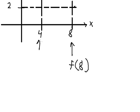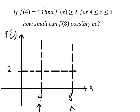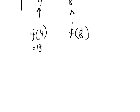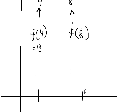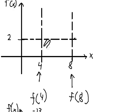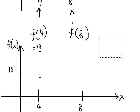We know f of number four. f of number four equals 13, so we need to graph the function here. We have number 13 — I will put this point here. The area of this region represents the change in the function.